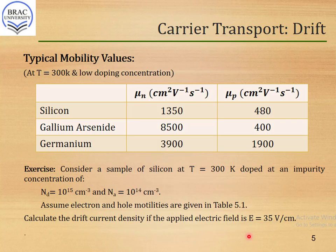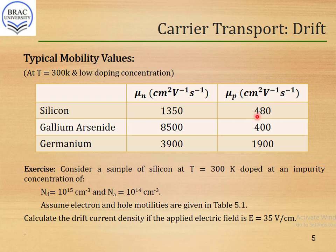In our discussion we have encountered new parameters: hole mobility mu_p and electron mobility mu_n. The typical values of these mobilities are shown in this chart. Note that these values hold for temperature equal to 300 K and low doping concentration. For silicon, electron mobility is 1350 and hole mobility is 480 cm²/V·s. Hole mobility is naturally lower than electron mobility. For gallium arsenide, electron mobility is 8500, substantially higher than silicon, and hole mobility is about 400. For germanium, electron mobility is 3900 and hole mobility is 1900.